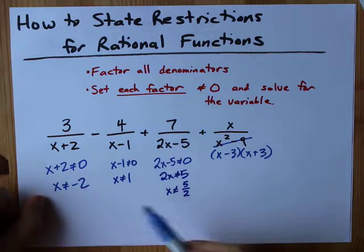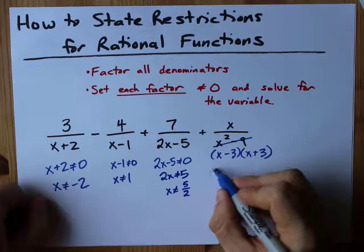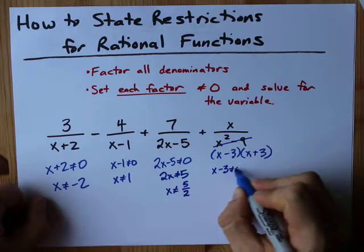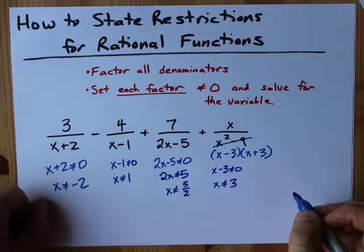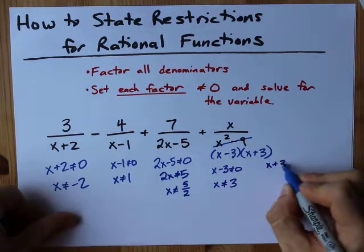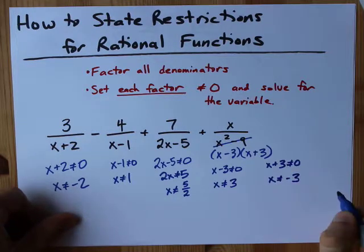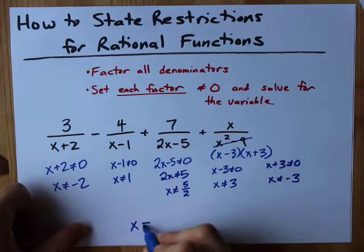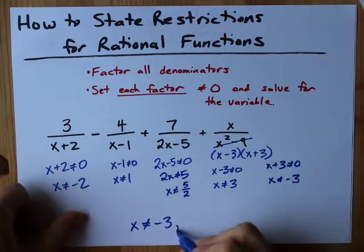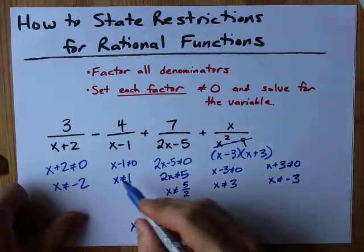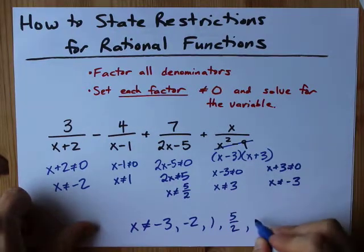That's a restriction that's a restriction that's a restriction and we got two more coming down the pipeline. x minus three can't be zero. Move the three over x is not allowed to be positive three. x plus three is not allowed to be zero so x is not allowed to be negative three. So my final answer here is that x is not allowed to be negative three or negative two or positive one or 2.5 or three.